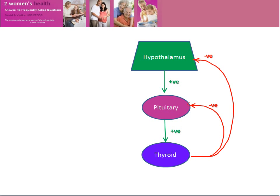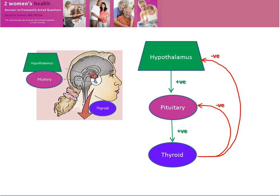Schematically, we can see the hypothalamus having a positive effect on the pituitary, the pituitary a positive effect on the thyroid, and then the thyroxin having a negative feedback effect on the hypothalamus and pituitary. Here we can see the scheme together with a diagram of the position of the hypothalamus and pituitary at the base of the brain and the thyroid gland, which is in the neck.